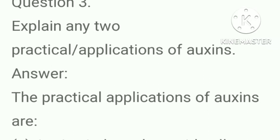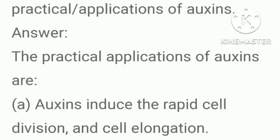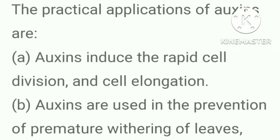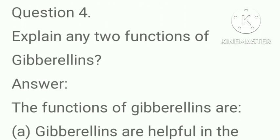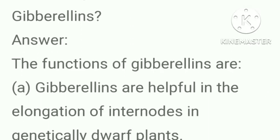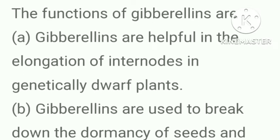Explain any two practical applications of auxins. Answer: Auxins induce rapid cell division and cell elongation. Auxins are used in the prevention of premature withering of leaves, flowers and fruits.